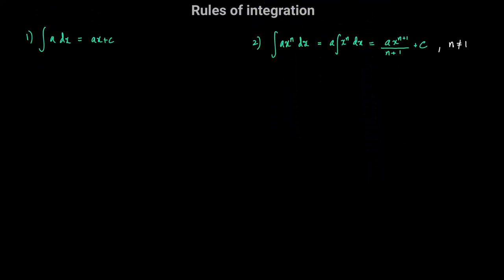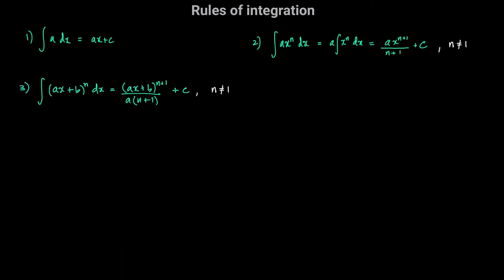The next rule is closely related to the power rule. Instead of integrating x to the power of n, we integrate a linear expression ax plus b, the whole thing, to the power of n with respect to x. We increase the power by 1, getting ax plus b to the power of n plus 1, divide by the new power n plus 1, but we also divide by the derivative of the expression itself. The derivative of ax plus b is simply a, so we divide by a as well, plus c. This rule applies for all powers n except n equals negative 1.